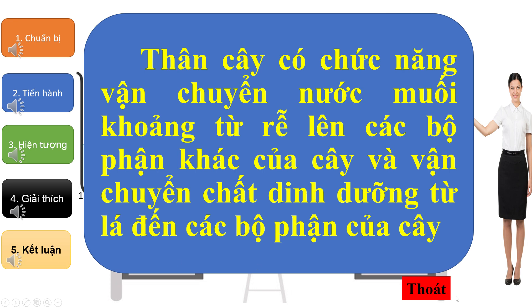Thân cây có chức năng vận chuyển nước, muối khoáng từ dưới lên các bộ phận khác của cây và vận chuyển chất dinh dưỡng từ lá đến các bộ phận của cây.